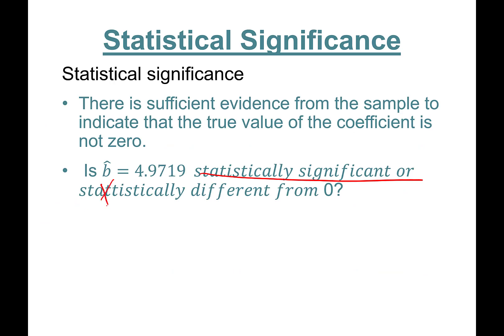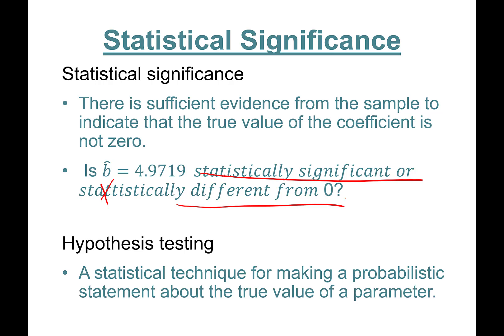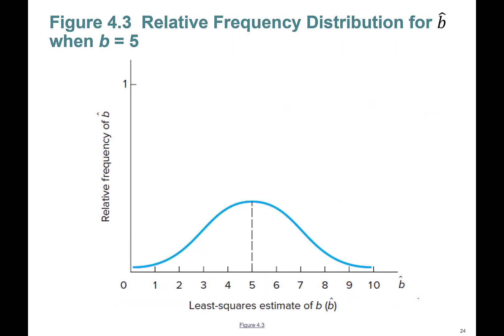We will conduct something called hypothesis testing — the statistical technique for making a probabilistic statement about the true value of a parameter. For example, let's say we look at different travel agency samples. Sample 1 has the seven agencies we looked at, and we grab another sample from the United States — let's say a hundred agencies.